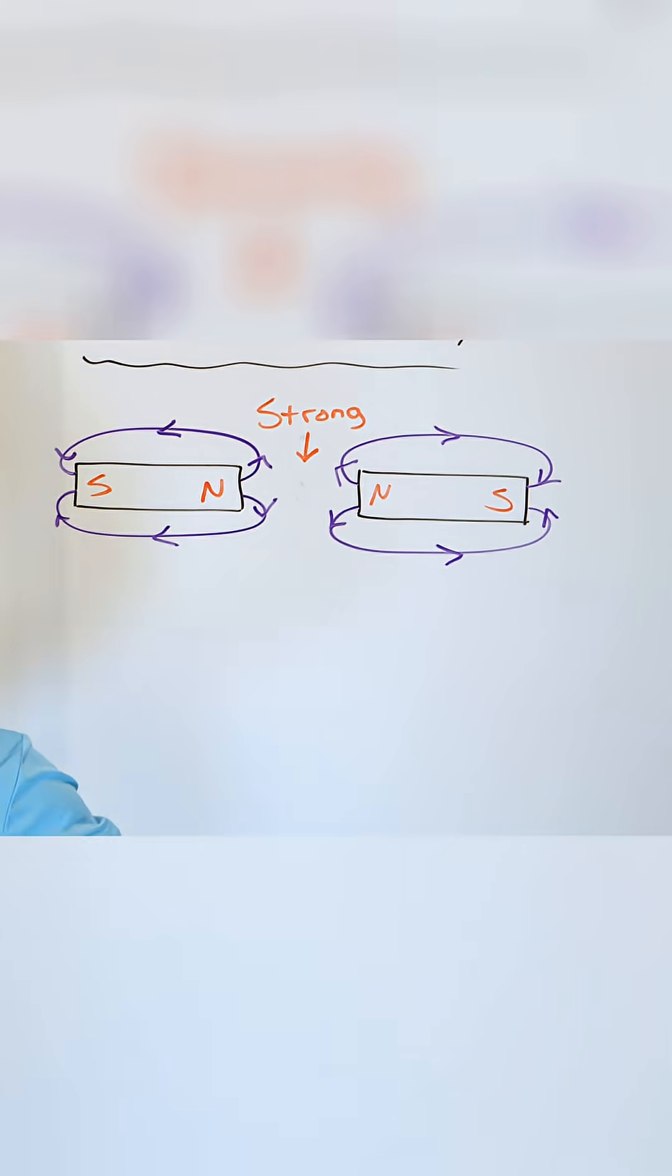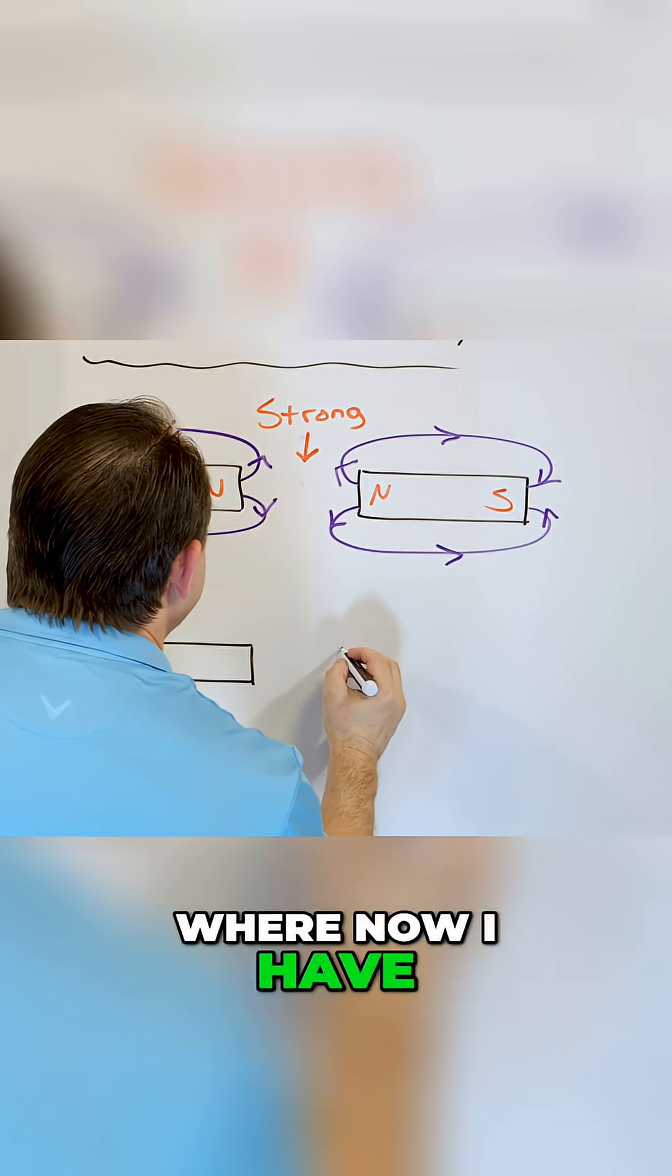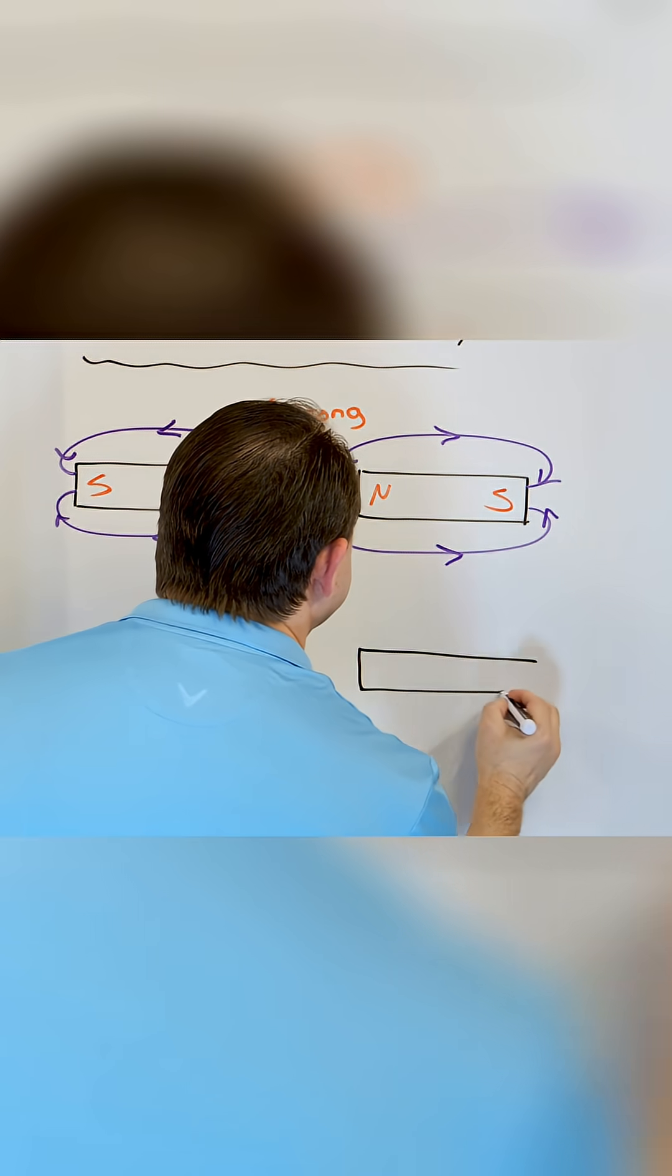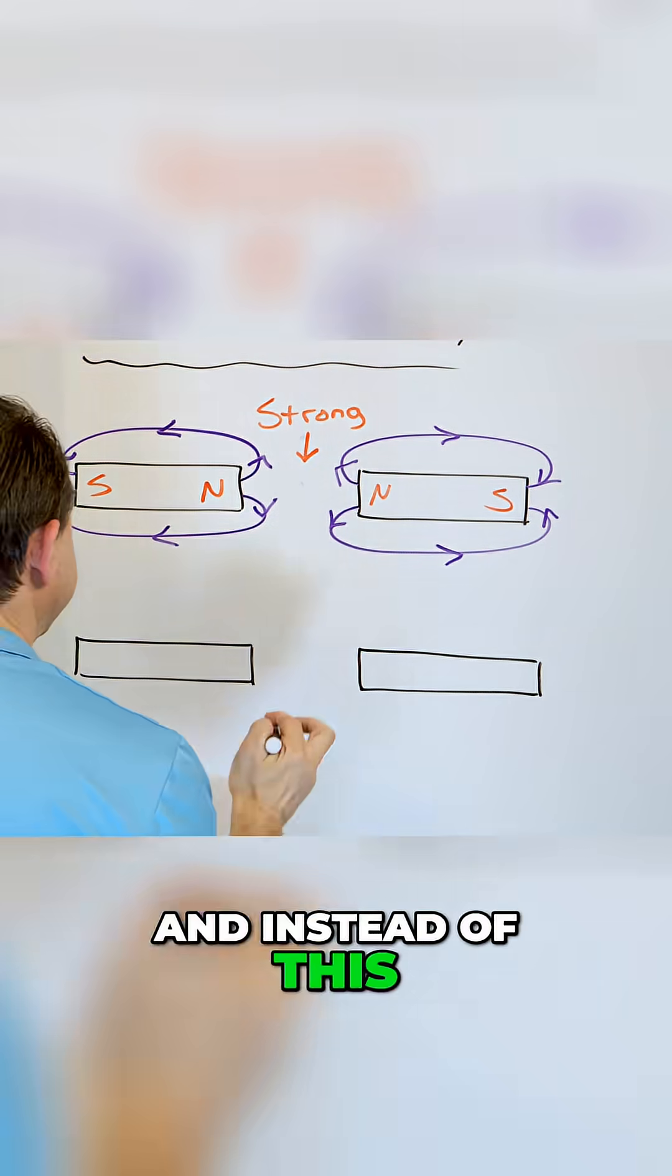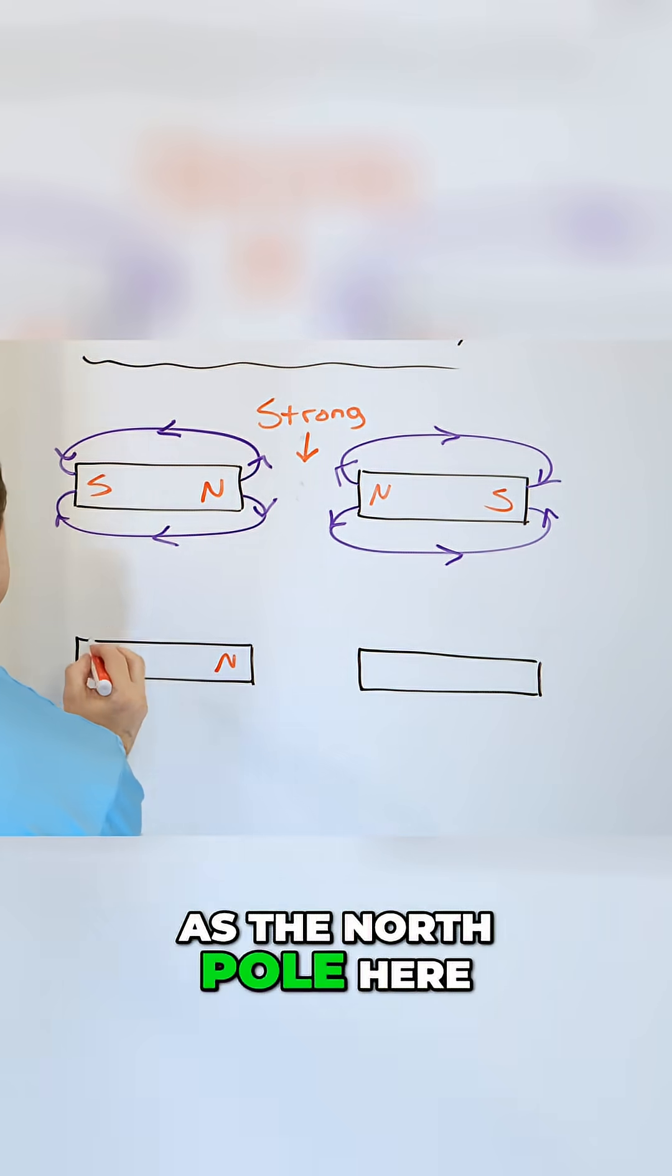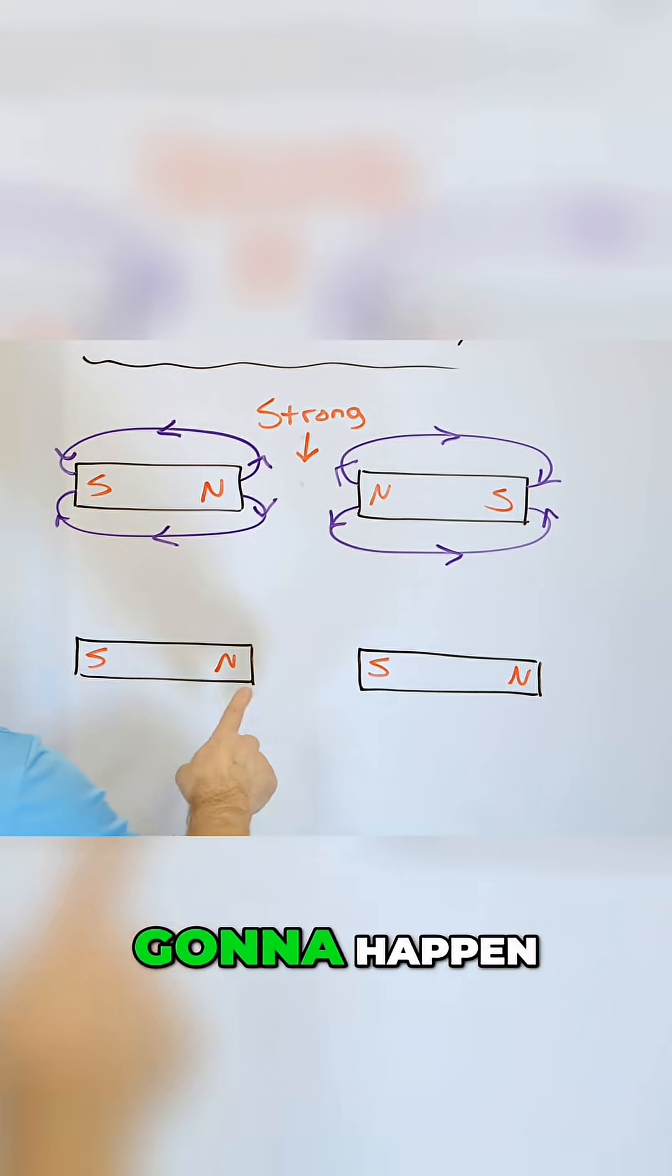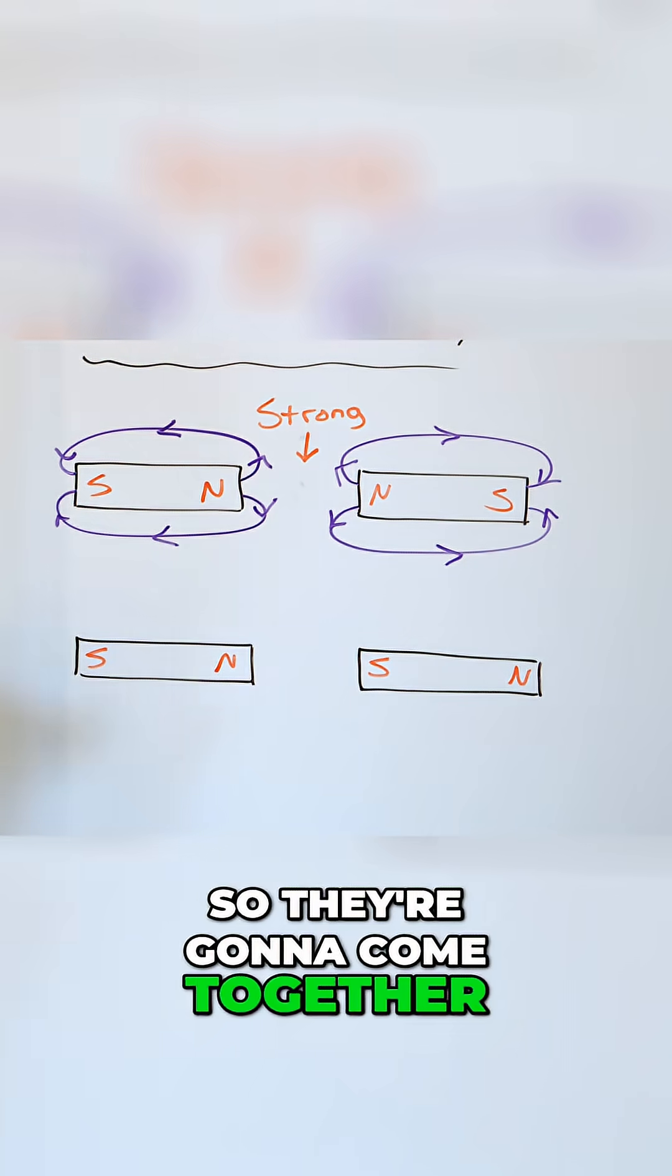Let us talk about the opposite situation. Let's talk about the situation where now I have two bar magnets, and instead of this, I put this as the north pole here, and I put this as the south pole here. You already know what's going to happen. Opposites attract, so they're going to come together.